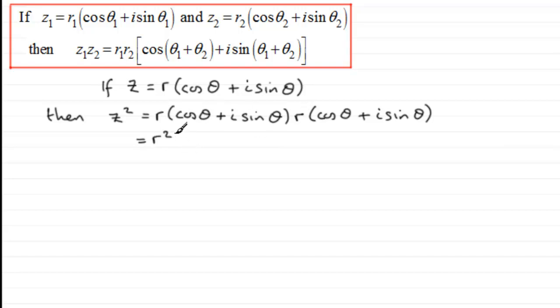So we get the cos of θ plus θ, which is cos 2θ, and when it comes to the sine, it's going to be i sin 2θ.